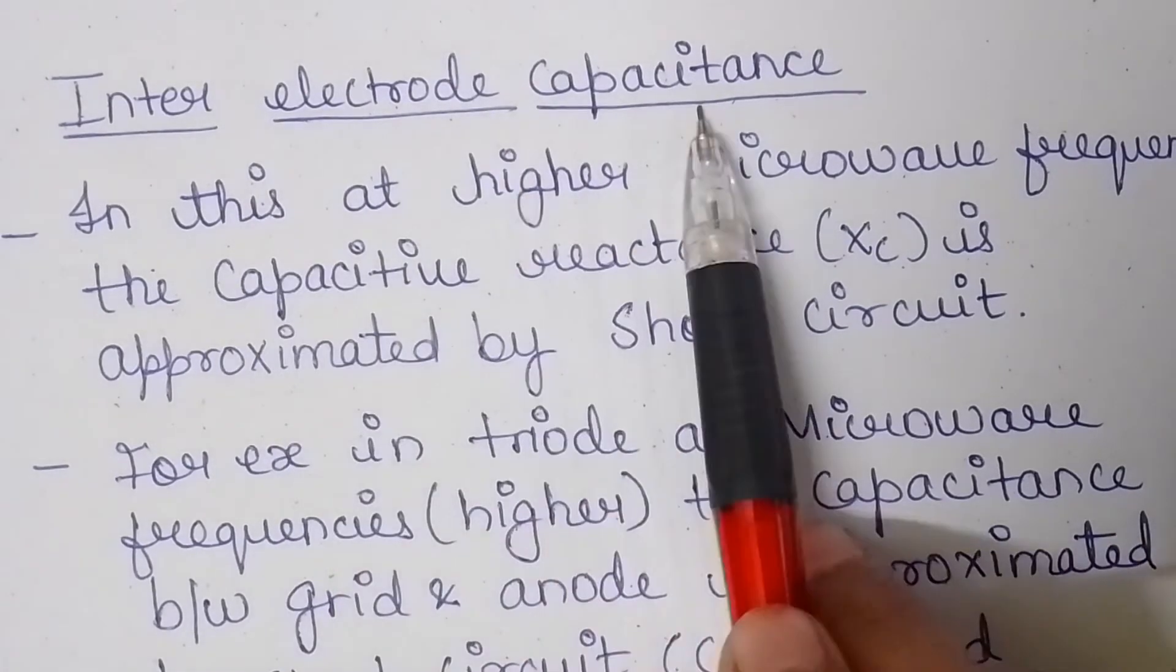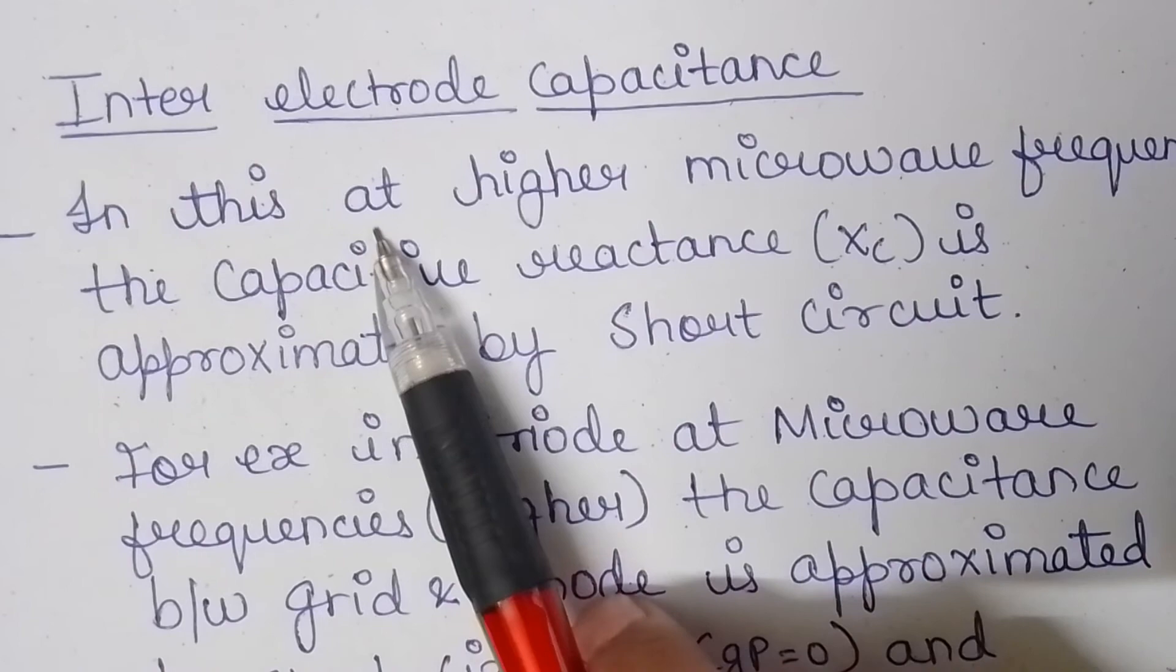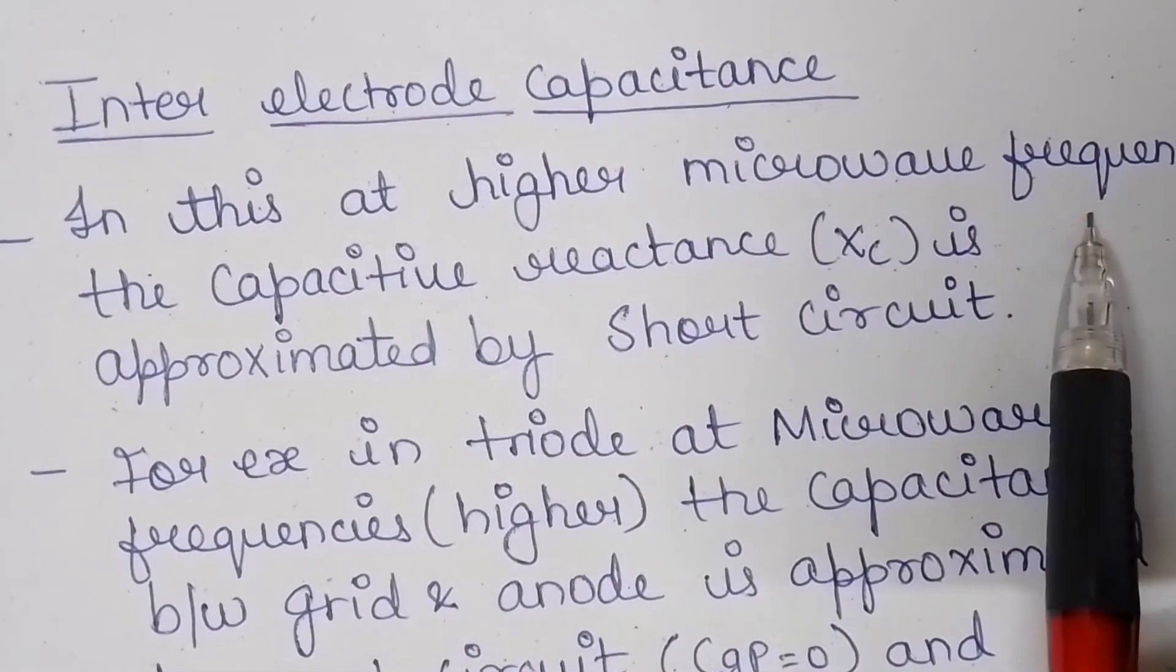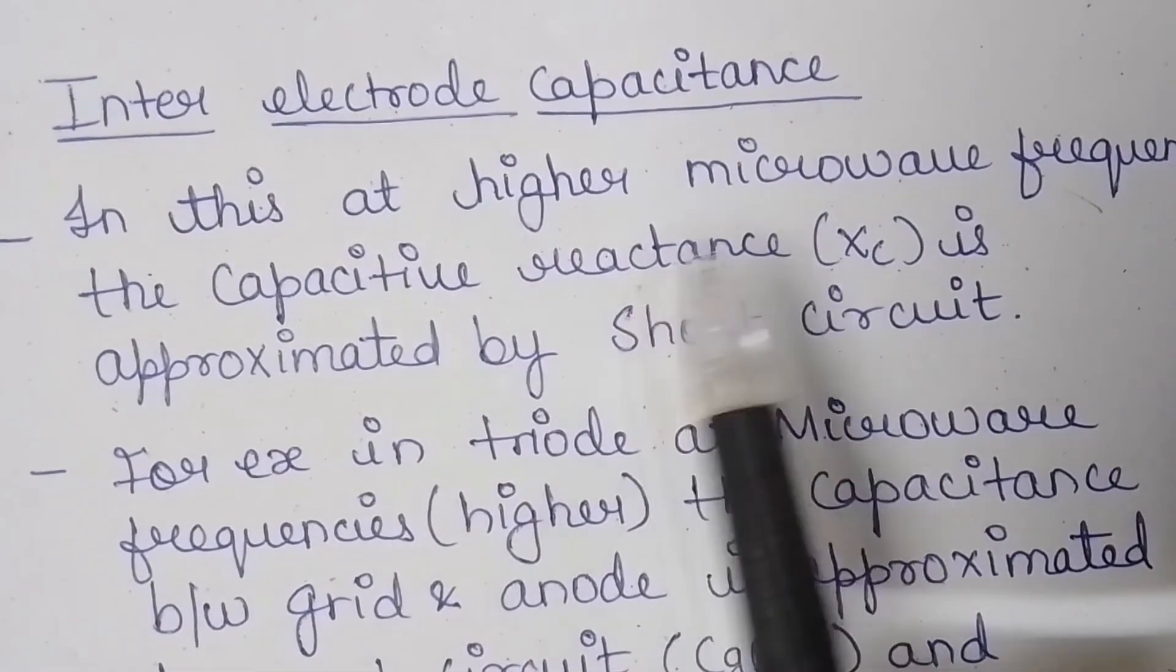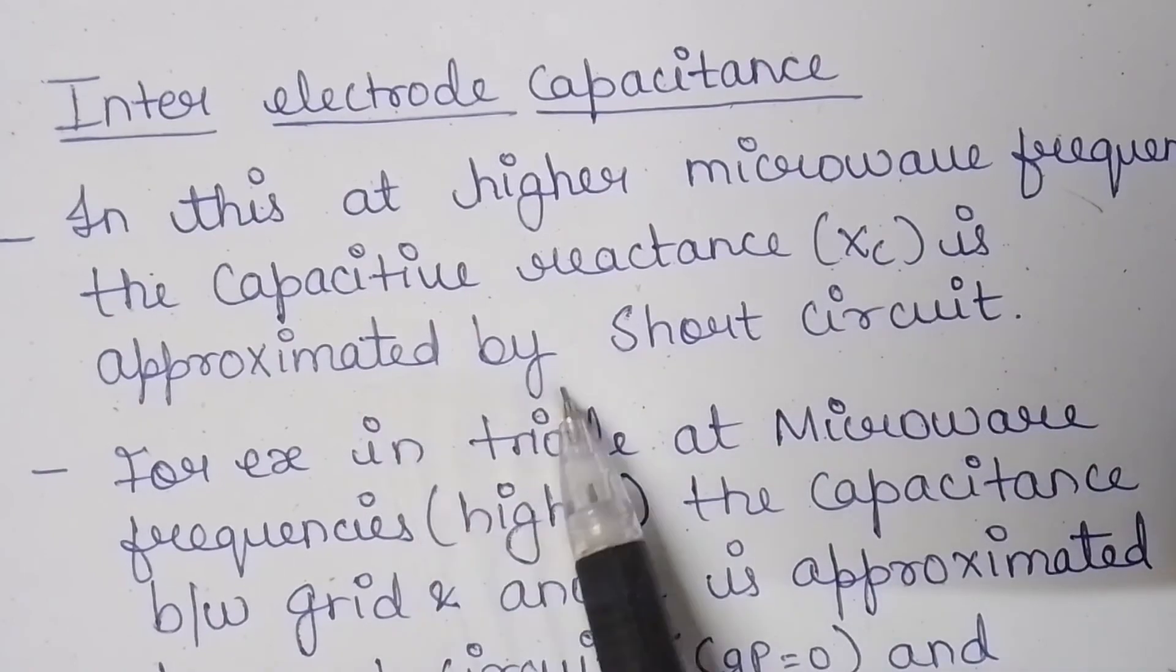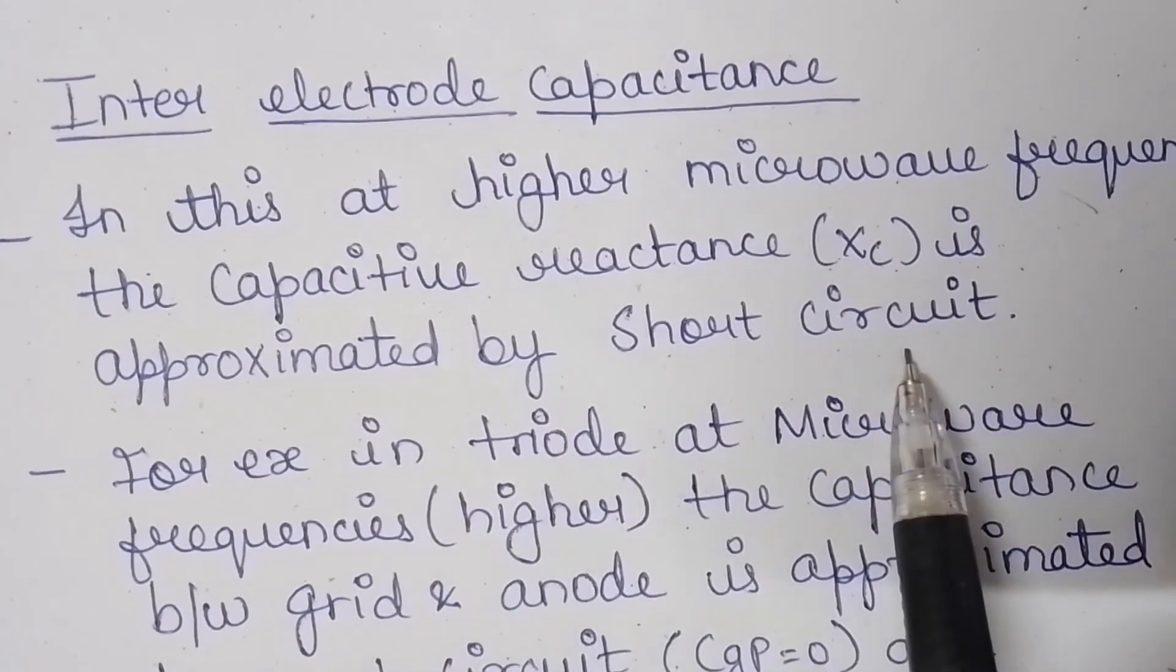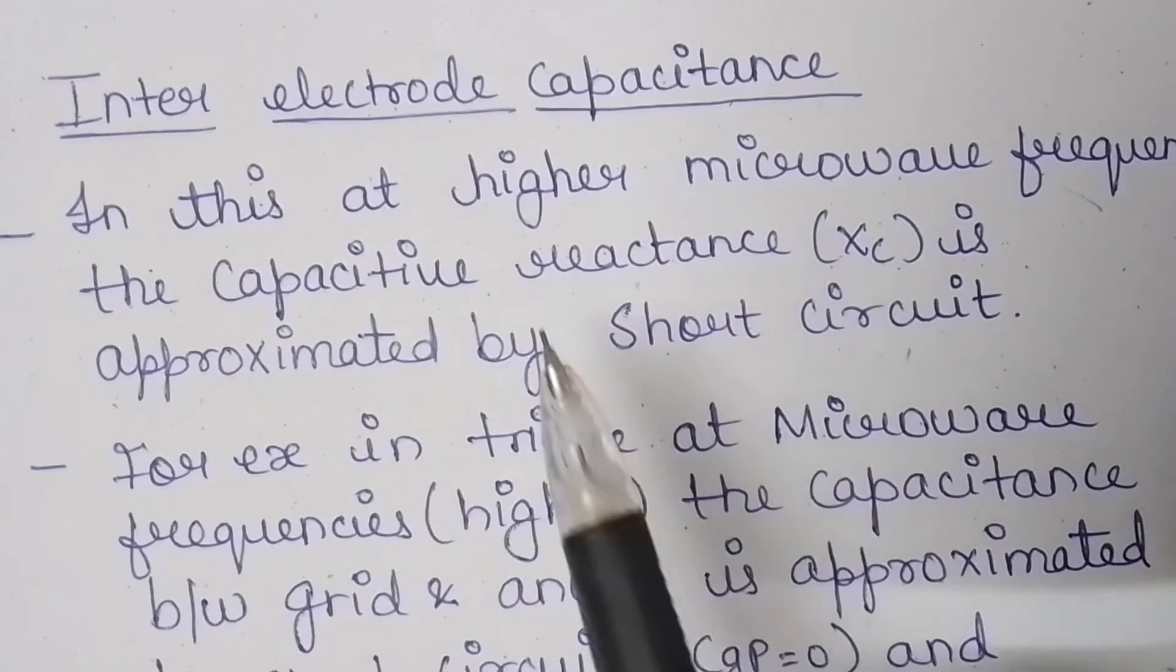So inter-electrode capacitance: at higher microwave frequencies the capacitive reactance, that is Xc, is approximated by a short circuit. Let's understand this through an example.